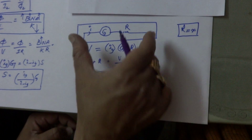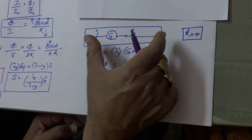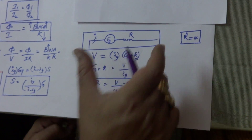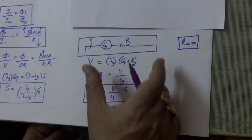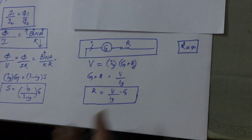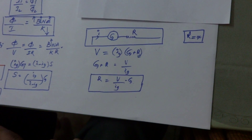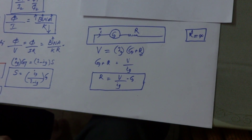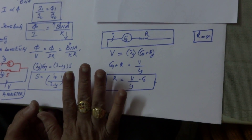As such, this voltmeter is always connected in any circuit in parallel to find the potential difference across two points in any circuit.